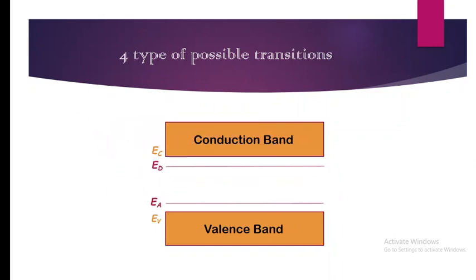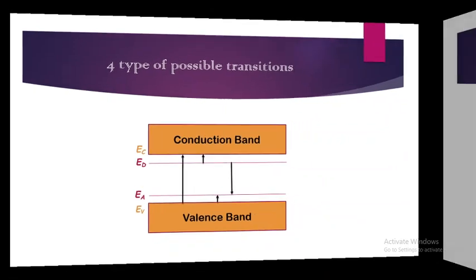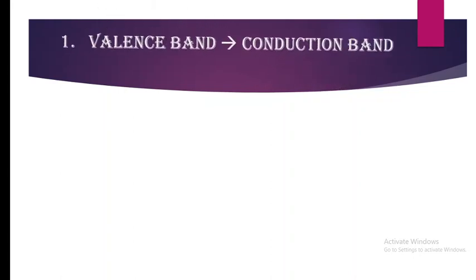...because of doping there is a donor level as well as an acceptor level, and the electron can do transitions in four different ways. The first is the transition of an electron from the valence band to the conduction band.